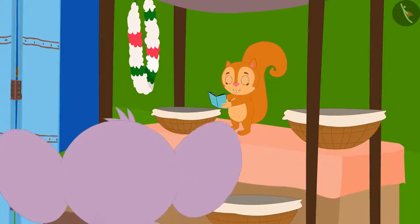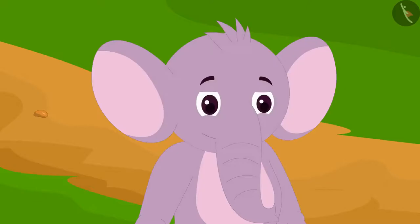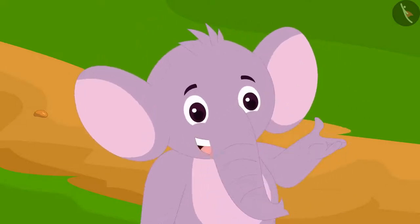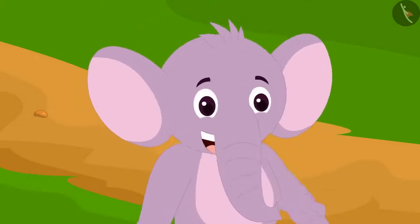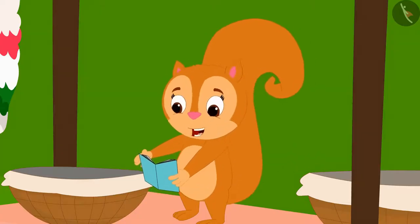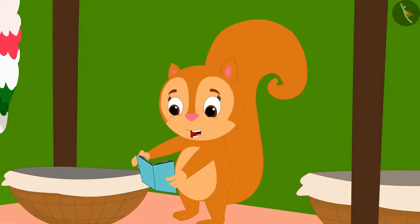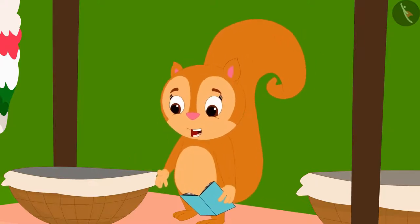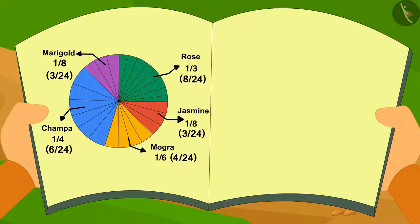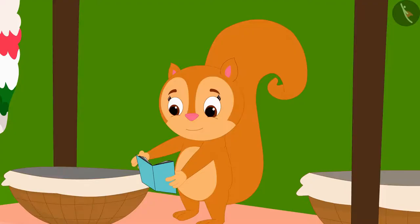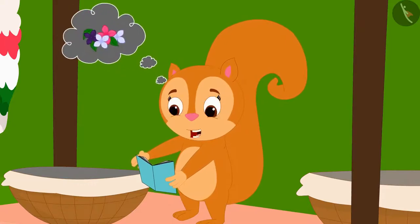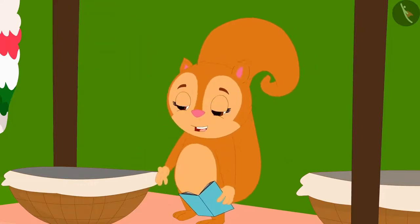Just then, Appu came to Chanda's shop. Chanda, what is this pie chart you made? This shows the popularity of my flowers. I have made this pie chart from the information about how many flowers I have used in the various orders. According to this, the largest part is the Champa flowers. It means Champa flowers are the most popular flowers. See, I have also learnt to make pie charts.